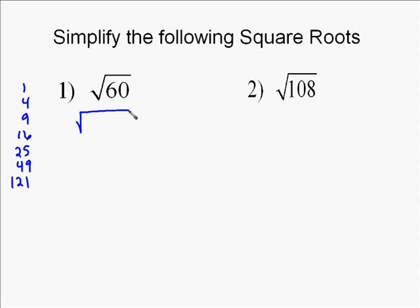And then what we do is we factor 60 into what I'll call perfect squares. So we look at 4 and say, does 4 go into 60? Well, in this case, it does. 4 times 15 does equal 60.